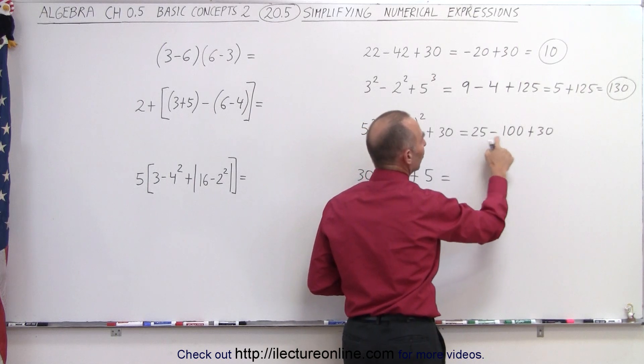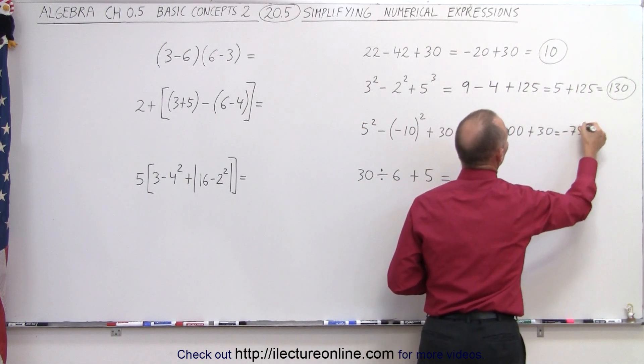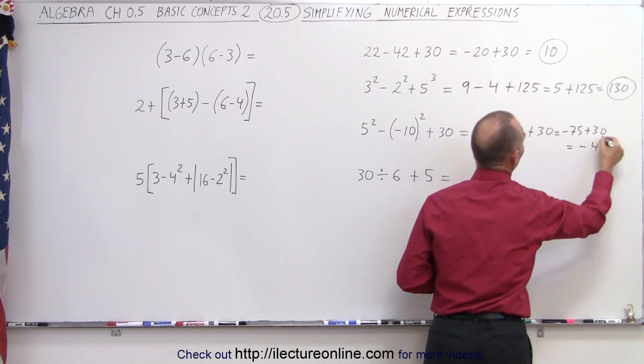Next, we go from left to right, so we have 25 minus 100, that's equal to minus 75, plus 30. And finally, when we add these together, that's equal to minus 45.